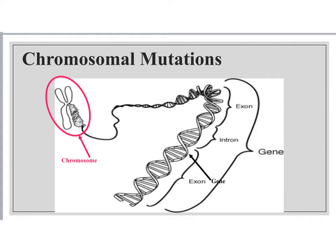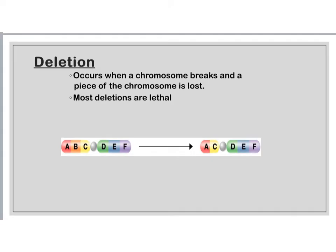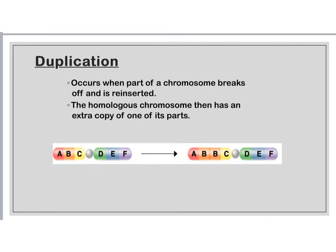Let's go ahead and talk about some chromosome mutations. In a chromosome, it's all of our DNA wrapped up, and sections of that DNA are what make our genes. We can have several different types of chromosomal mutations. You can have a deletion when part of your chromosome is broken off and you've lost that piece — most deletions are lethal, so if an embryo has a deletion in one of their chromosomes, they typically do not survive. We can also have duplication, when part of your chromosome breaks off and gets reinserted, so you have an extra copy of those genes. Duplications can be non-effective, but sometimes they can be harmful because you have too much of that gene.